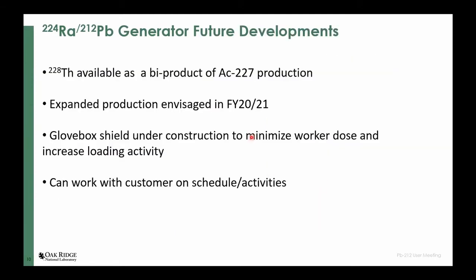Regarding future developments at Oak Ridge: we have an extended available supply of thorium-228 that we anticipate using for all radium-lead-212 generator production, allowing us to load higher activities on generators. We expect to expand production in FY20/FY21. Adding a glove box shield will further minimize worker dose, allowing us to load more radium and supply higher activity generators. We can continue to work with customers on schedules for generators and activities that can be loaded. That's all from me.